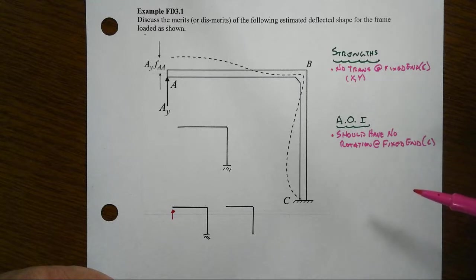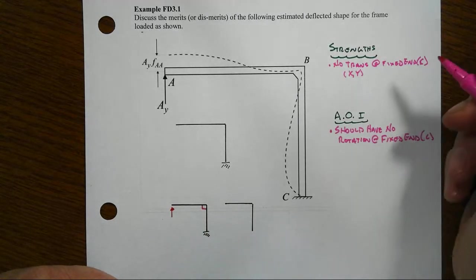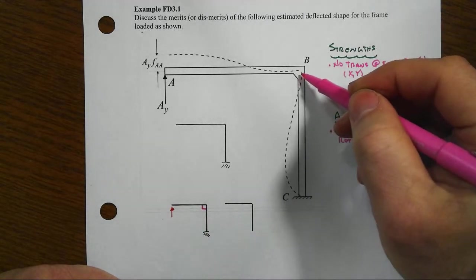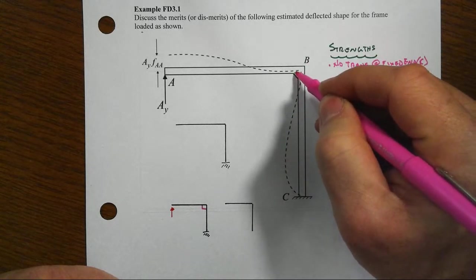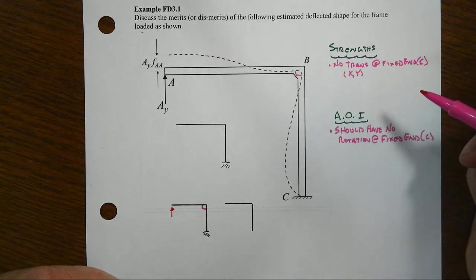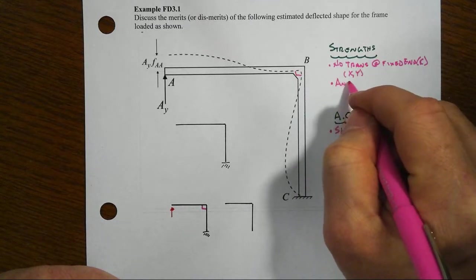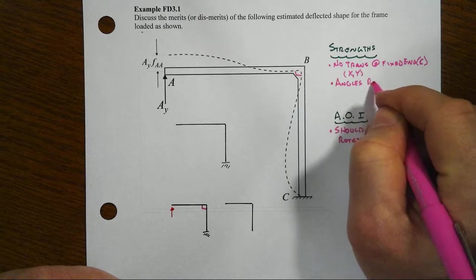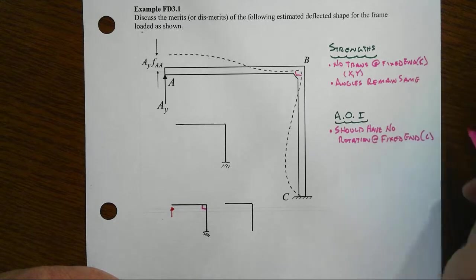Let's look also at the original angles, that the beam and the column are at 90 degrees in the original, and in the proposed deflected shape, then we also have, it looks to be pretty close to a right angle as well.